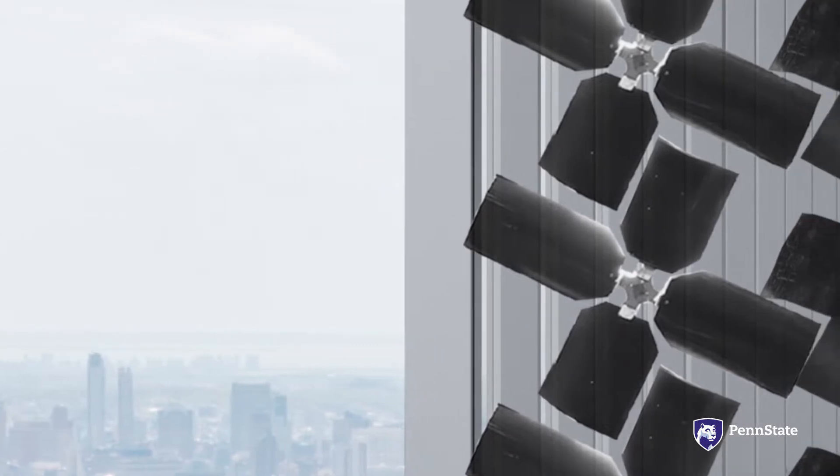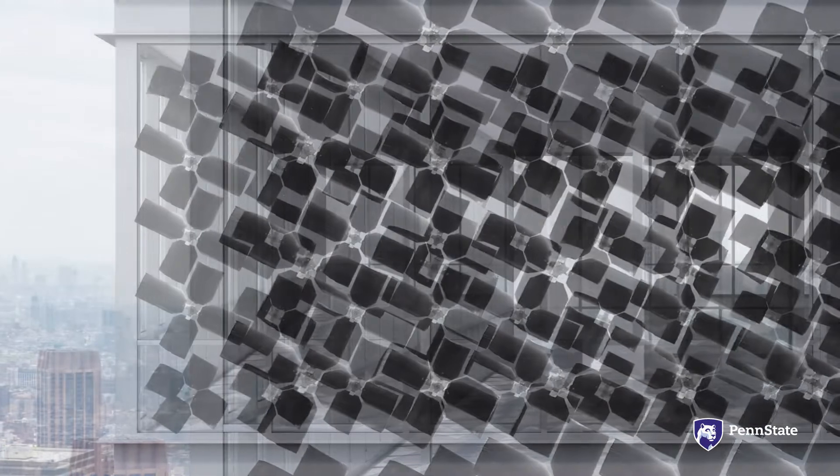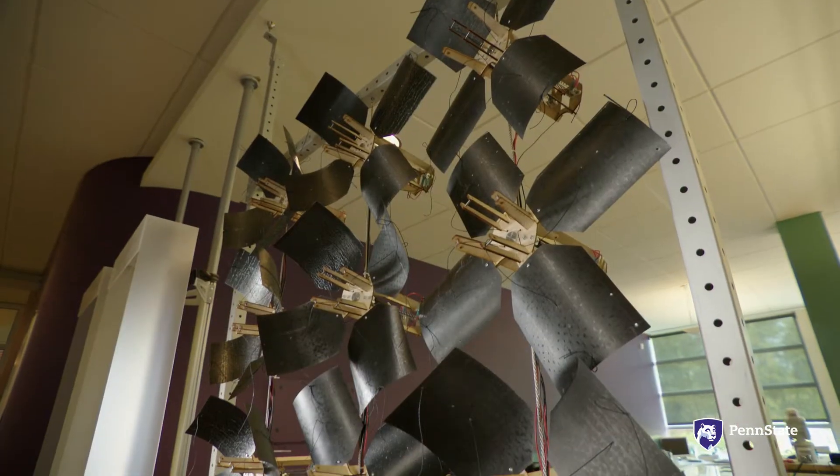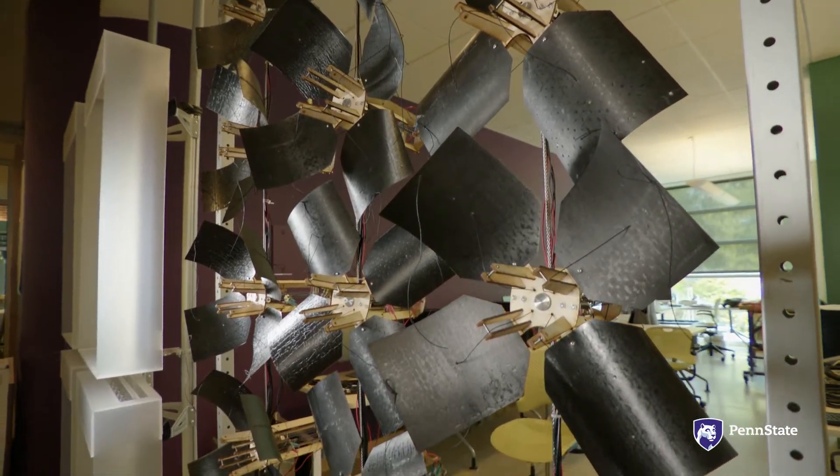Kinetic building shades, which open and close according to existing outdoor conditions and indoor requirements, could help improve daylight performance. For instance, when it is darker outside, the shades can automatically open to let more light into the building. And when it is too bright, they can close.